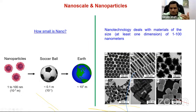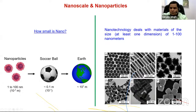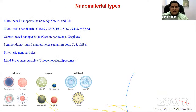You can also prepare triangular, prism-shaped, and nanoparticle cubes — these are called nanocubes. So nanoparticles come in a variety of shapes.